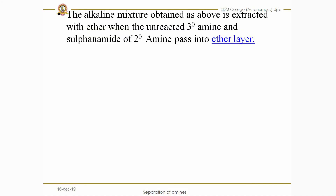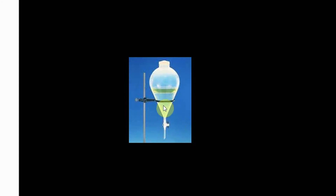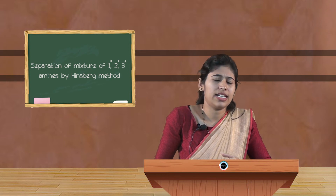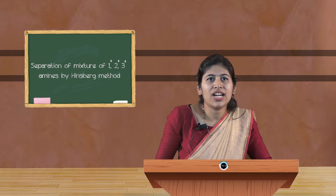This alkaline mixture is then extracted with ether. When ether is added in a separating funnel, the insoluble products — the unreacted tertiary amine and the sulfonamide of the secondary amine — pass to the ether layer. You can see the separating funnel in the slide showing two layers. The secondary and tertiary amine products go to the ether layer, and the primary amine product remains in the water layer. By opening the separating funnel, these two layers can be collected separately in different beakers.